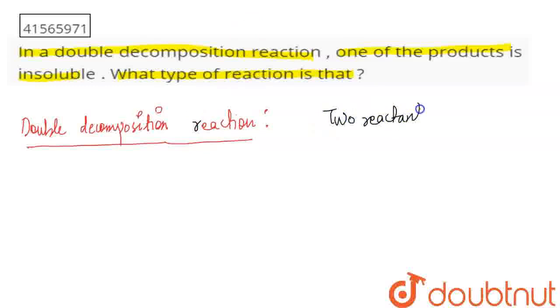You have two reactants. In these two reactants, we have two parts. They are basically compound types, so one anionic part and one cationic part will be there.